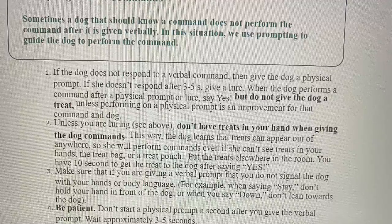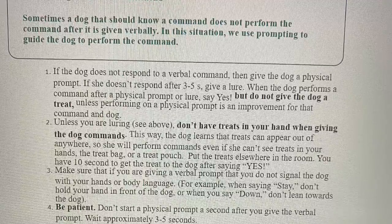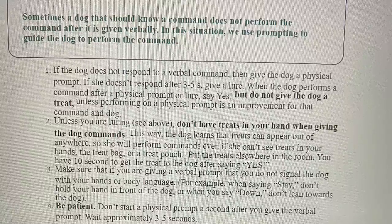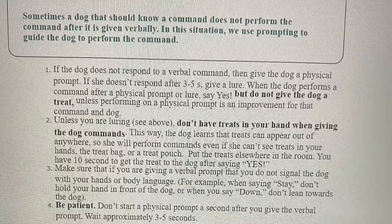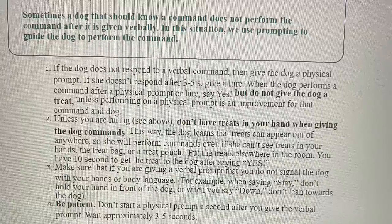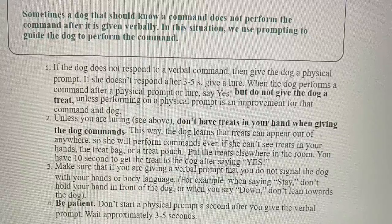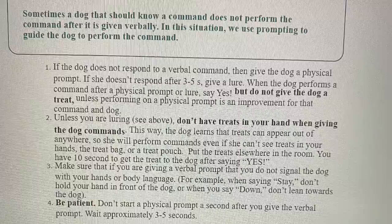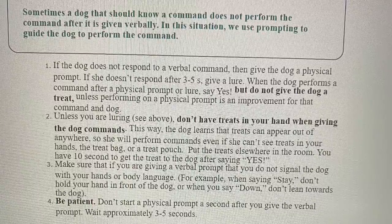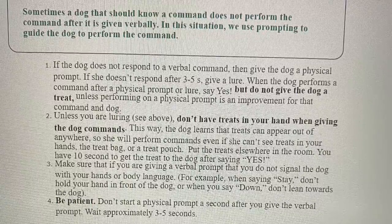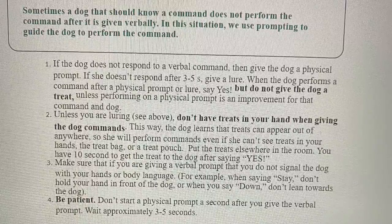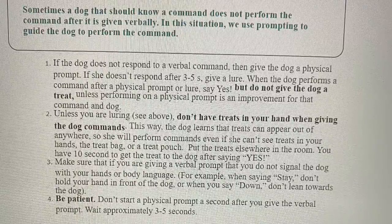Rule 3: Put the treats elsewhere in the room. You have 10 seconds to get the treat to the dog after saying yes. Make sure that if you are giving a verbal prompt, you do not signal the dog with your hands or body language. For example, when saying "stay," don't hold your hand in front of the dog. Or when you say "down," don't lean towards the dog. Rule 4: Be patient. Don't start a physical prompt a second after you give the verbal prompt — wait approximately three to five seconds.